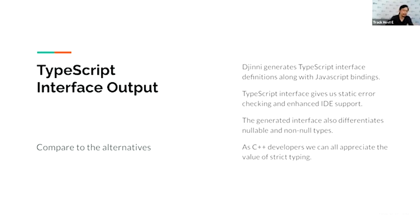Another big reason is we generate TypeScript interface output. The other tools are JavaScript only, but we generate very type-rich type definitions for TypeScript. It gives us static error checking in IDE and very nice syntax completion in IDEs such as Visual Studio Code. We generate interfaces that differentiate nullable and non-null types, so you're less likely to make mistakes.